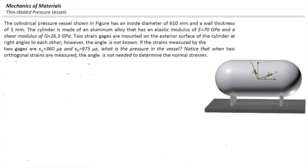Two strain gauges are mounted on the exterior surface of the cylinder at right angles to each other. However, the angle theta is not known. If the strains measured by two gauges are 360 and 975, what is the pressure in the vessel?